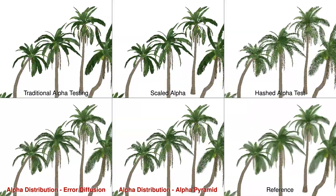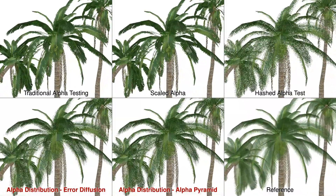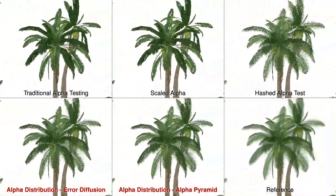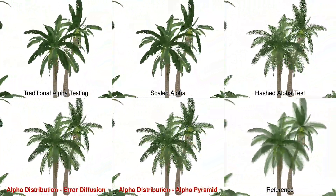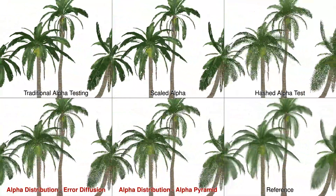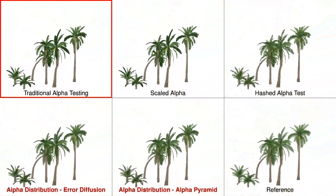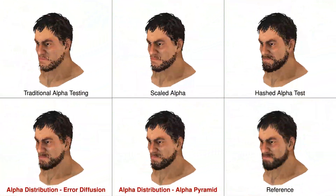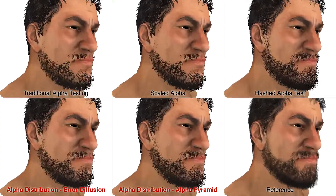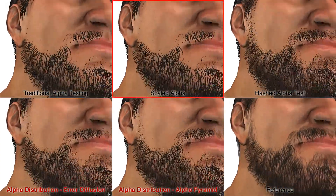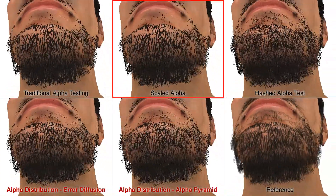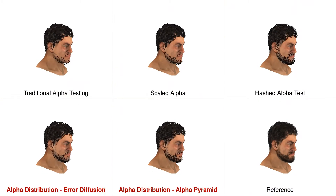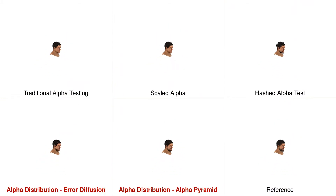This video compares different methods for alpha testing to a ground truth reference that is shown on the bottom right. As you see, traditional alpha testing fails to handle semi-transparent textures. Simply scaling the alpha values cannot always fix the problems of traditional alpha testing.